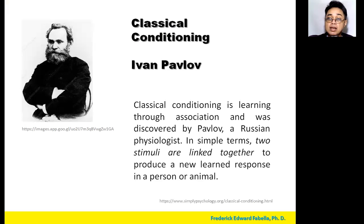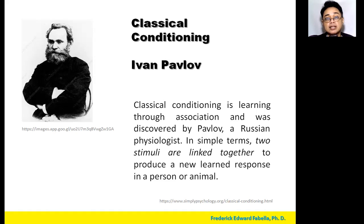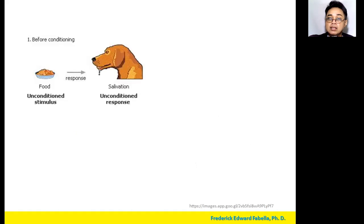So that's Ivan Pavlov. Classical conditioning is learning through association and it was discovered by a physiologist in Russia. His name is Ivan Pavlov, and he explains classical conditioning this way: two stimuli are linked together to produce a new learned response in a person or an animal. Look at this diagram here — this is how Ivan Pavlov discovered his classical conditioning.